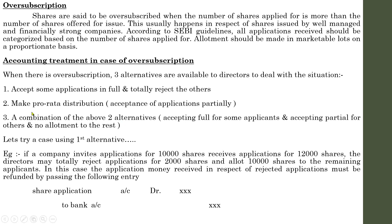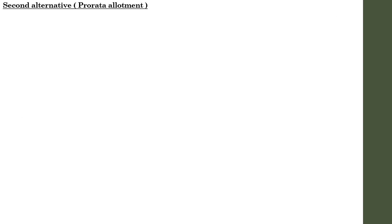The second alternative is pro-rata allotment, or in simple terms we can say ratio allotment. This is the most commonly used alternative by a company whenever they have to deal with a situation of oversubscription.